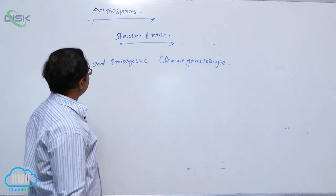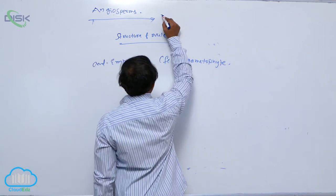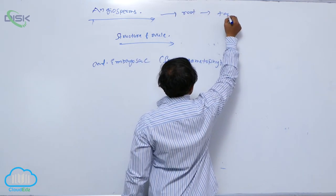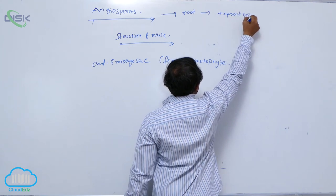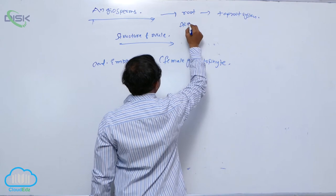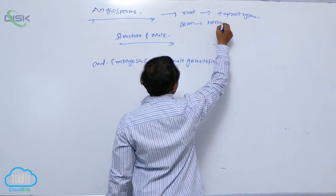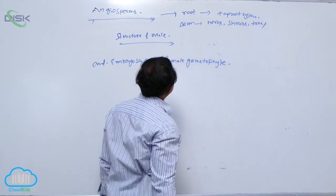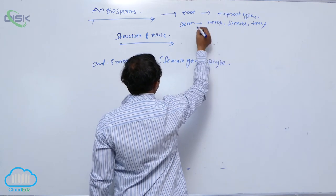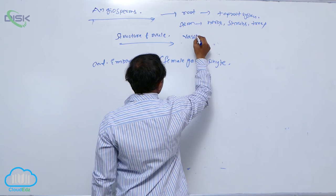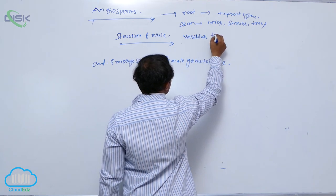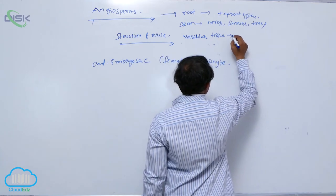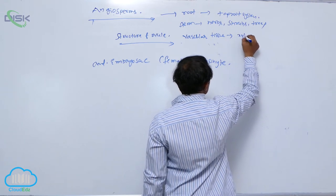Before explaining the structure of the ovule and female gametophyte, angiosperms also have tap root systems. The stem can be herbs, shrubs, or trees. Inside the stem and root, vascular tissues are present. In the stem, xylem and phloem are present.